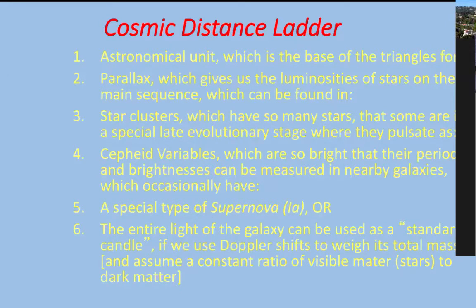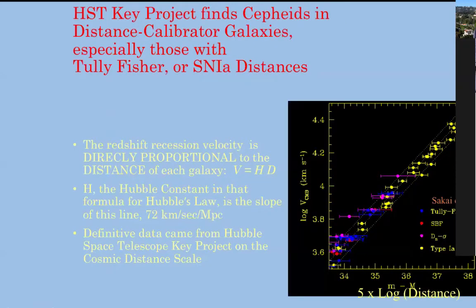Most galaxies, we're not going to be lucky enough to catch a supernova. But we could measure the rotation velocity of that galaxy — that's an easy measurement — and locate it on the Tully-Fisher relation. The classic Hubble relation diagram: V equals HD. The further away a galaxy is, the faster its recession velocity from us. The slope of the line is H, and that's what they were trying to measure — a slope of about 72 kilometers per second for every additional megaparsec of distance away from Earth.